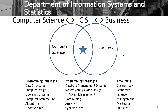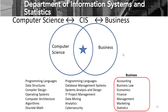Another frequently asked question is: what is the difference between computer science and computer information systems? Computer science coursework focuses on programming languages, data structures, compiler design, operating systems, computer architecture, and algorithms, and also includes quite a bit of discrete math and calculus. A business student, on the other hand, takes courses in accounting, business law, economics, finance, management, marketing, and statistics.